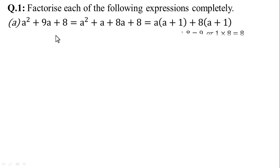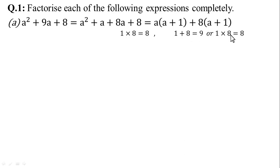Here, 1 multiplied by 8 equals 8. So 9 is divided into two parts: 1 plus 8 equals 9, and 1 multiplied by 8 equals 8. When multiplying both terms, answer is 8, and when added, answer is 9. So we can divide the midterm 9 into two pieces.